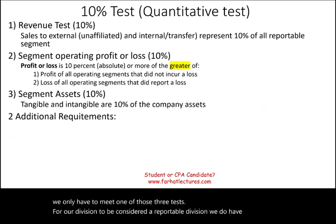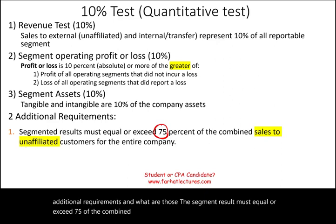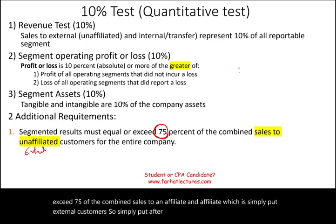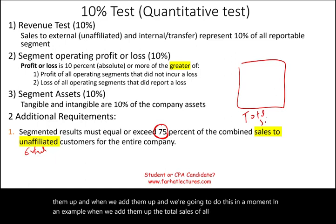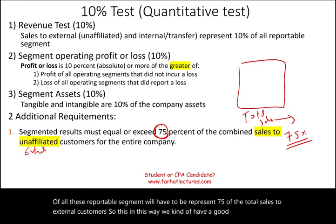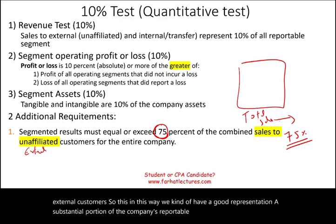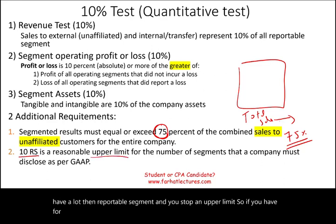There are two additional requirements. The segment results must equal or exceed 75% of combined sales to external customers. After identifying the reportable segments, we add up their total sales — those total sales must represent at least 75% of total sales to external customers, ensuring a substantial portion of the company's activity is represented. Also, if you have a very large number of reportable segments, GAAP sets an upper limit of 10 — if you have 13, you stop at 10, because reporting more becomes burdensome and not cost effective.